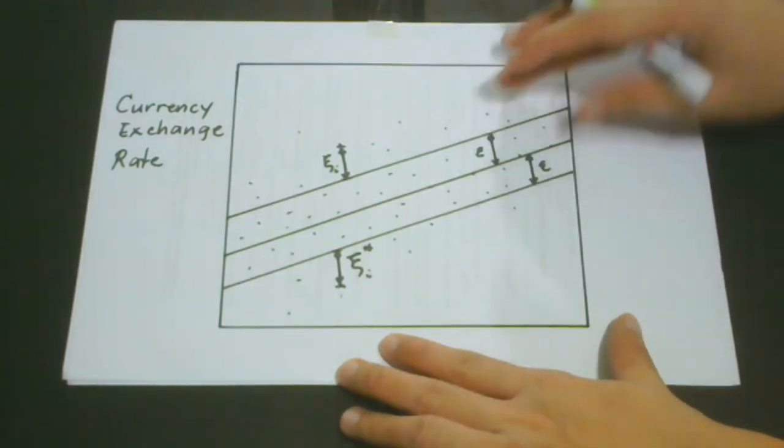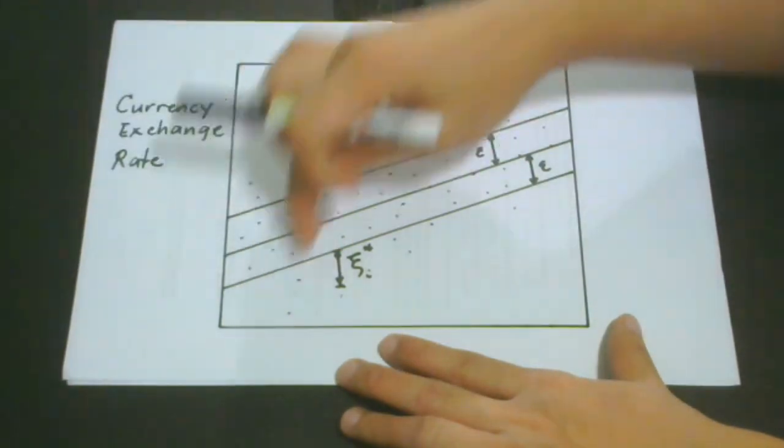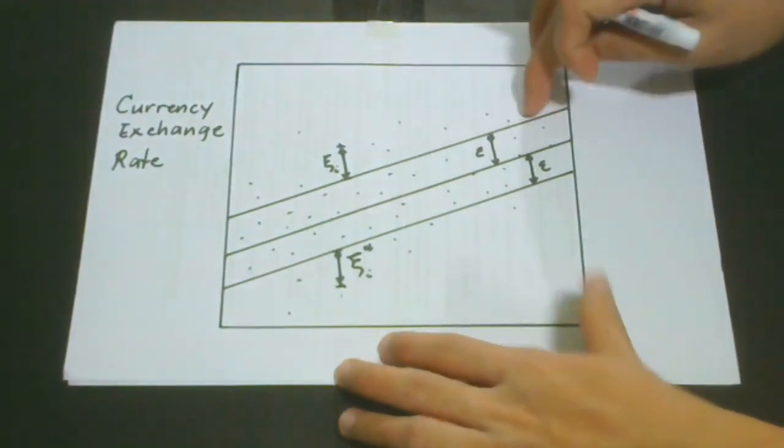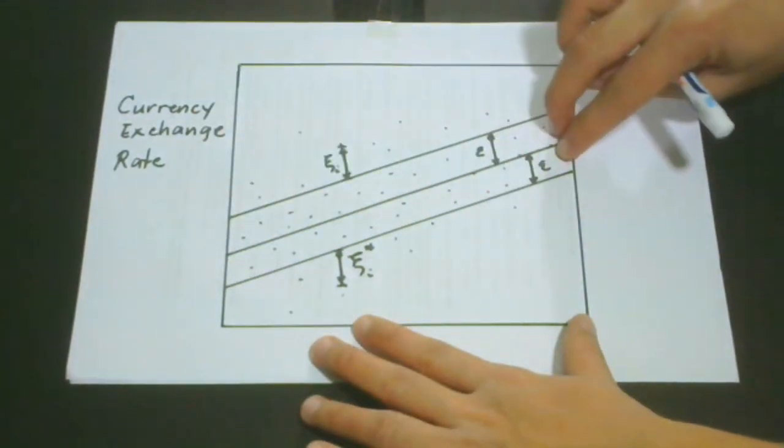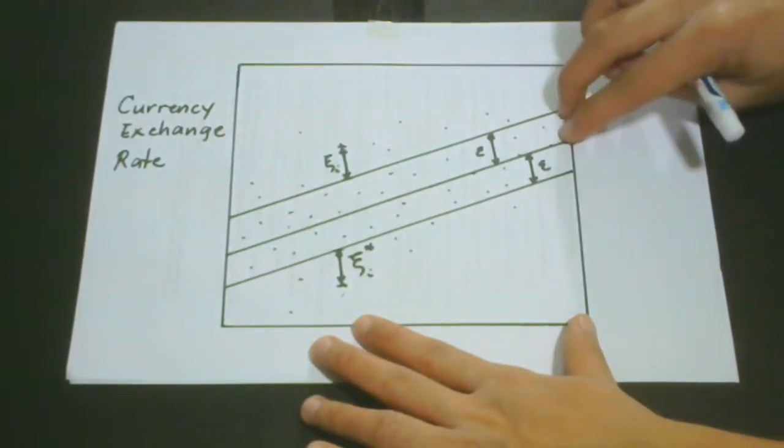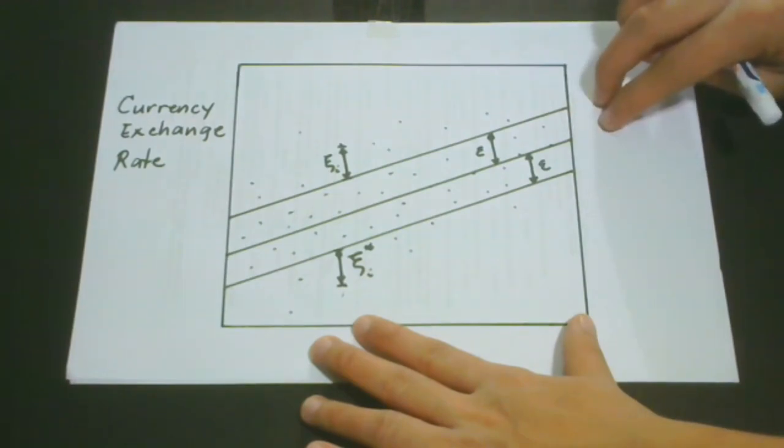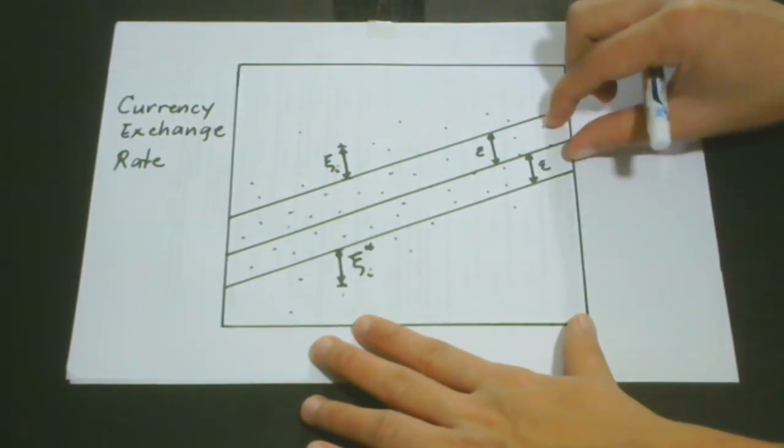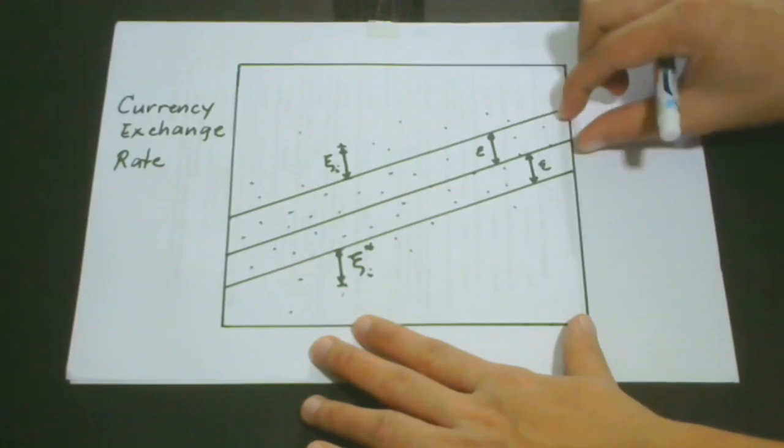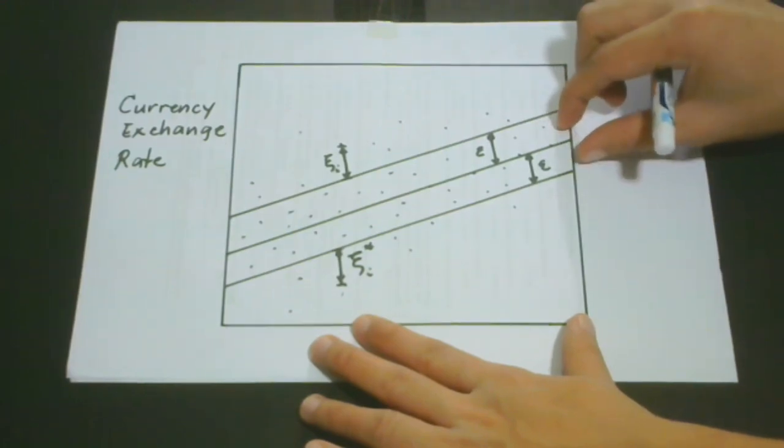So in this diagram, we could see the different points of the different values of the different currencies. This region would tell us that the predictive value can be very much perfect, and the error is really very small, and that is guaranteed.